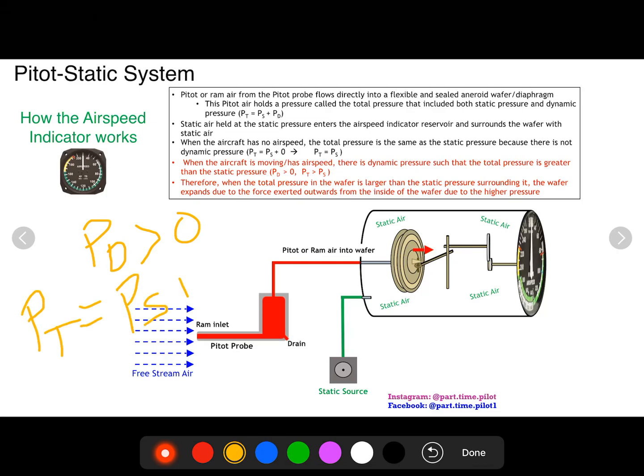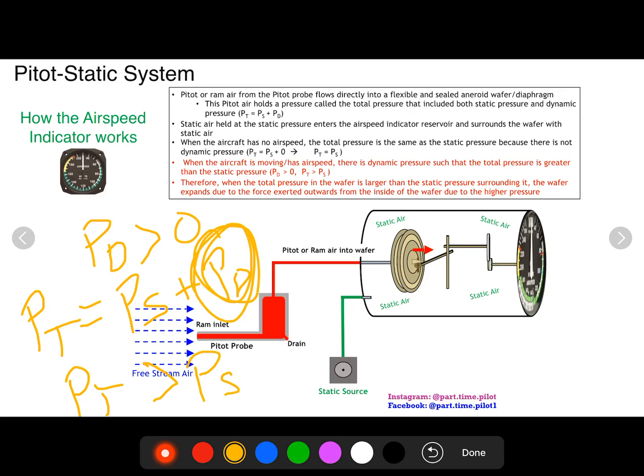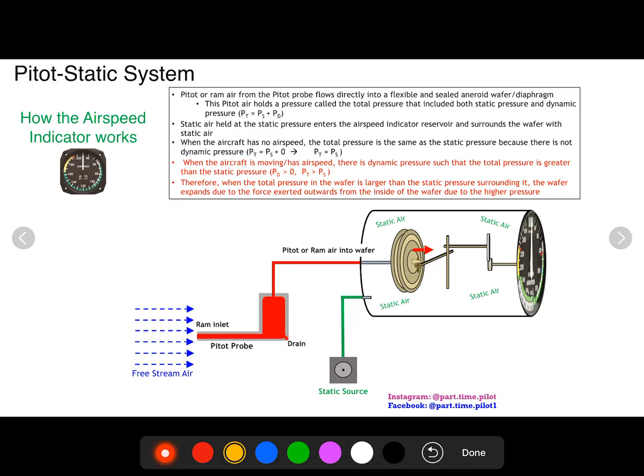When it's no longer zero, so dynamic pressure is greater than zero, this means P_T equals something not zero, P_D. So now P_T is greater than static pressure because of this dynamic pressure which is non-zero and greater than zero.